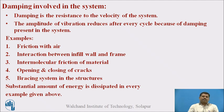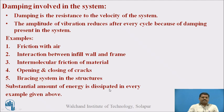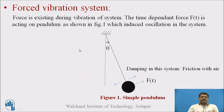The damping involved in the system is viscous type of damping, which is the resistance against the velocity of the system. The decay in the amplitude of vibration after every cycle is possible only because of the damping present in the system. These examples demonstrate that a substantial amount of energy is dissipated in every cycle due to damping.